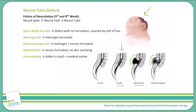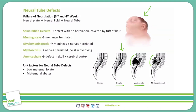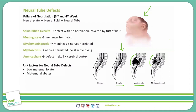Now, there are a few other things we need to know about neural tube defects — specifically, risk factors. The primary risk factor is a low maternal folate level. Maternal diabetes is also associated, but the main one to remember is low maternal folate. This is part of the reason for the U.S. Preventive Services Task Force recommendation that all women of childbearing age take a daily supplement containing folic acid, since this critical period of neural development happens in the third and fourth weeks — before a woman may even realize she's pregnant.